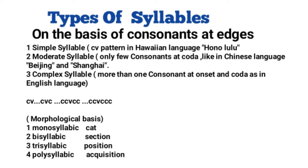A syllable can be of three types, especially when talking about consonants at the start and end. The first type is a simple syllable, which follows a very simple CV structure — that is, consonant and vowel. Consider the word 'Honolulu.' This word follows the CV pattern, so it is a simple syllable.